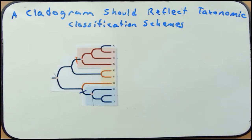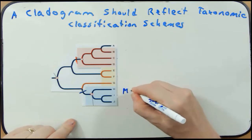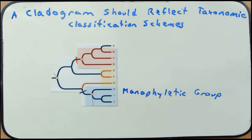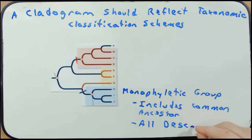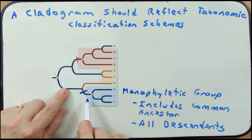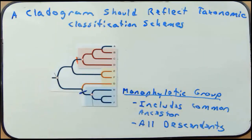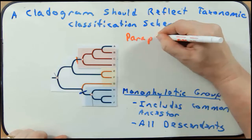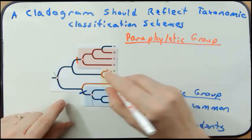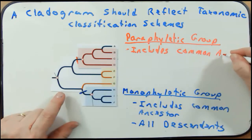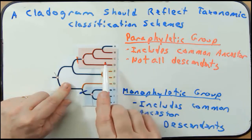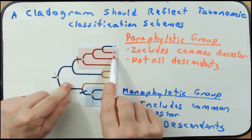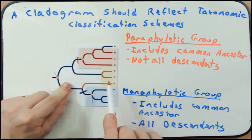A monophyletic group includes the common ancestor and all the descendants of that common ancestor. If we cut a line that includes the common ancestor and all its descendants, that is a monophyletic group. A paraphyletic group, on the other hand, includes the common ancestor but not all the descendants. This paraphyletic group here includes the common ancestor and most descendants — taxa B, C, and D — but not taxon A.